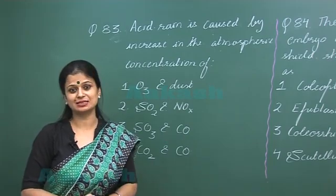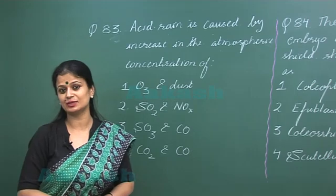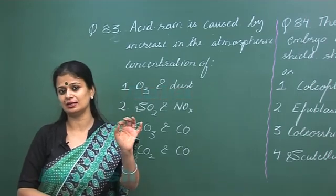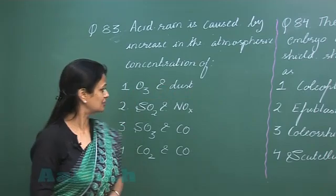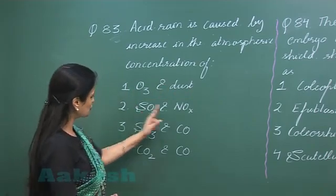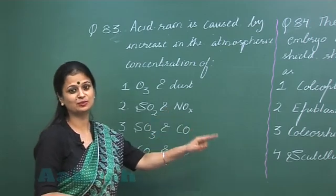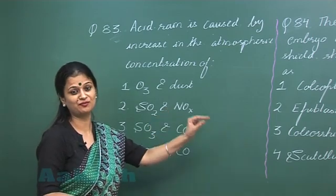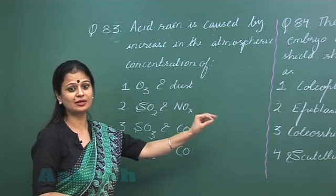One more acid is also present in acid rain, that is HCl, but its concentration is very less. So mainly these two gases are responsible for the formation of acids in acid rain.